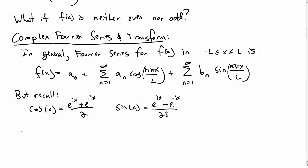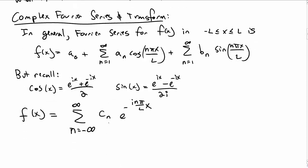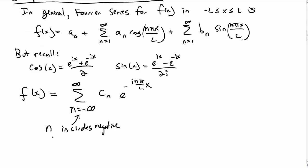Then we can rewrite this whole series f of x as one big sum from n equal negative infinity to infinity, c sub n, e to the i n pi over l, x, where note now that the sum includes n from negative infinity to infinity. So, you have negative numbers in the n's, whereas previously we only had positive n's. The c sub n is in general, in this case, complex.